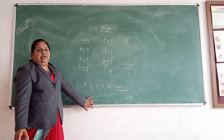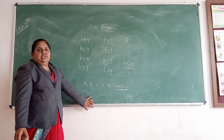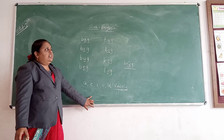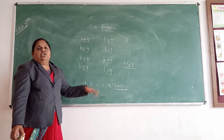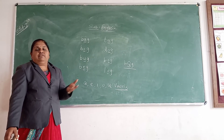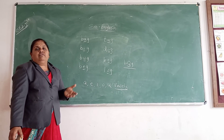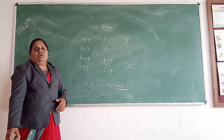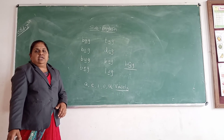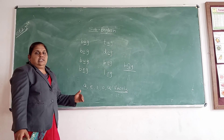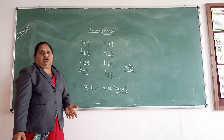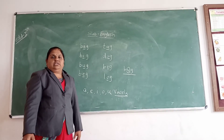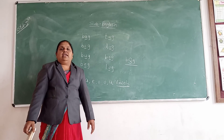So friends, do you understand this? Now, with the help of these vowels, you have to make different types of words. Okay, friends? Now you understand this? Now you make different types of words. Okay? Thank you.